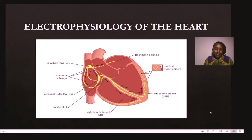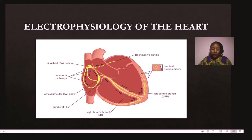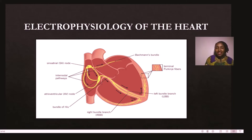Before getting into ECG rhythm interpretation, it is important to understand the electrophysiology of the heart. The sinoatrial (SA) node — located in the right atrium — is where the electrical impulses start being generated. The SA node fires and communicates to the atrioventricular (AV) node. From the AV node it goes through the bundle of His, through the right and left bundle branches, ending at the Purkinje fibers, which act as the last line of pacemaking.